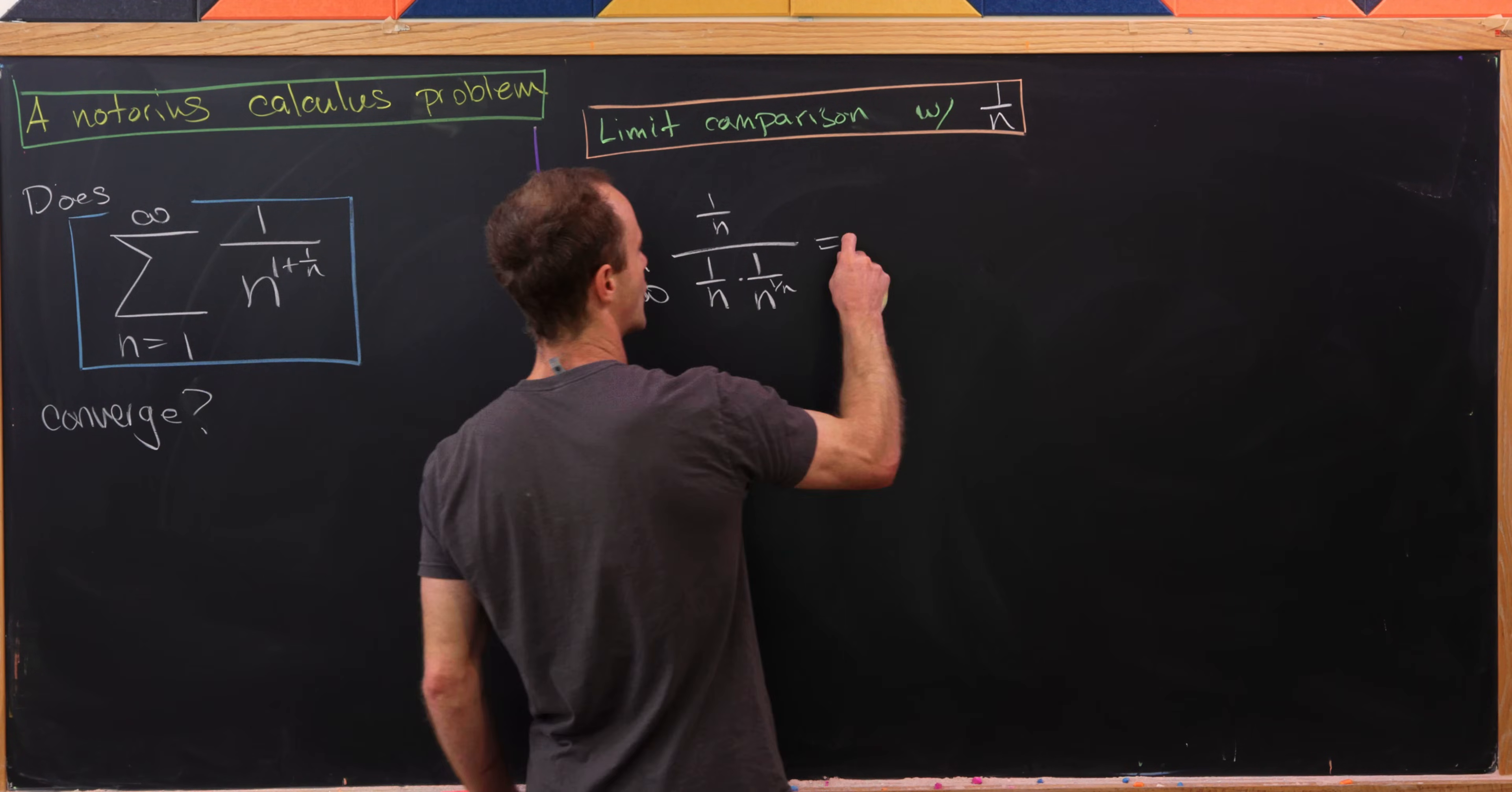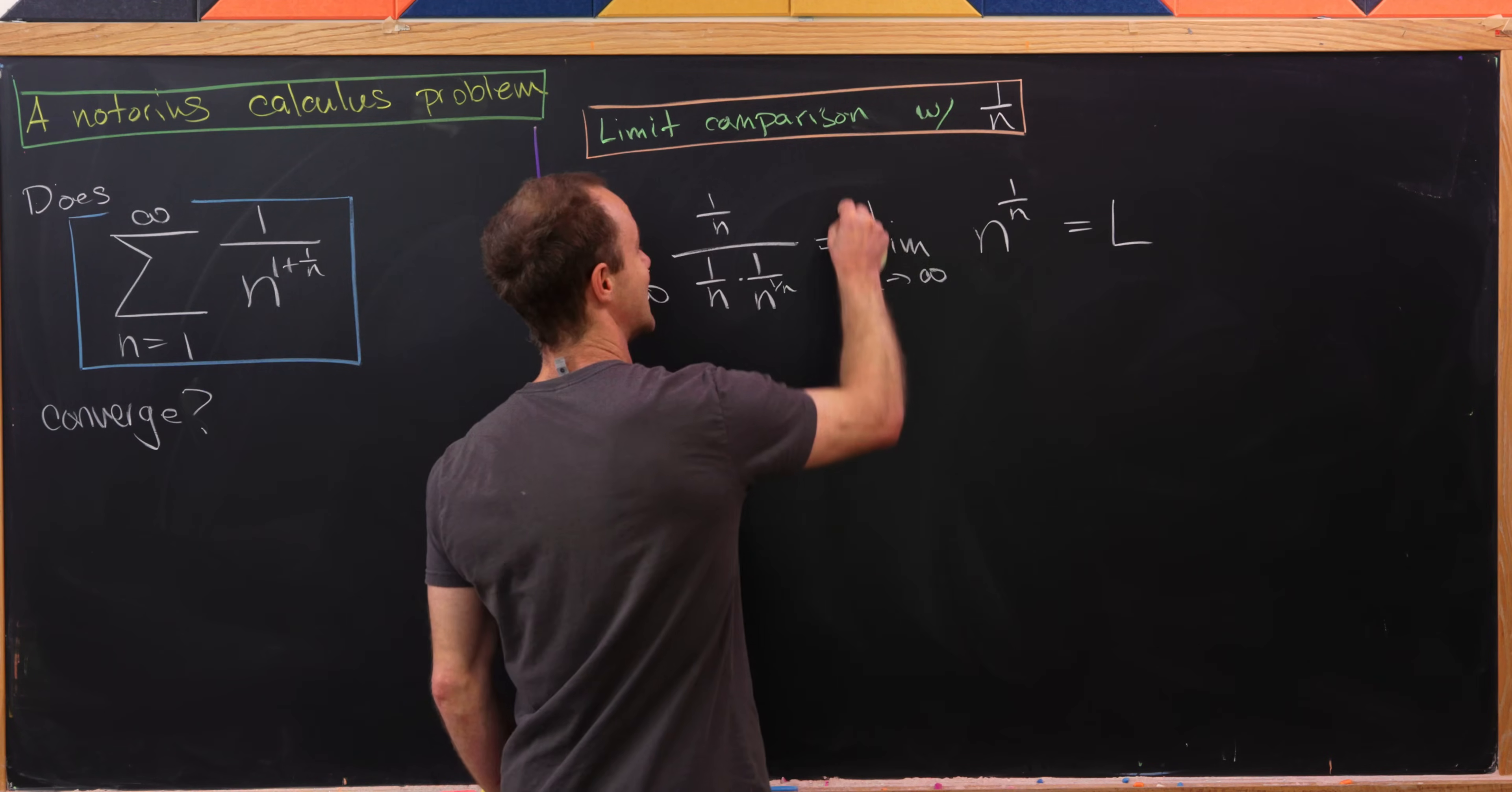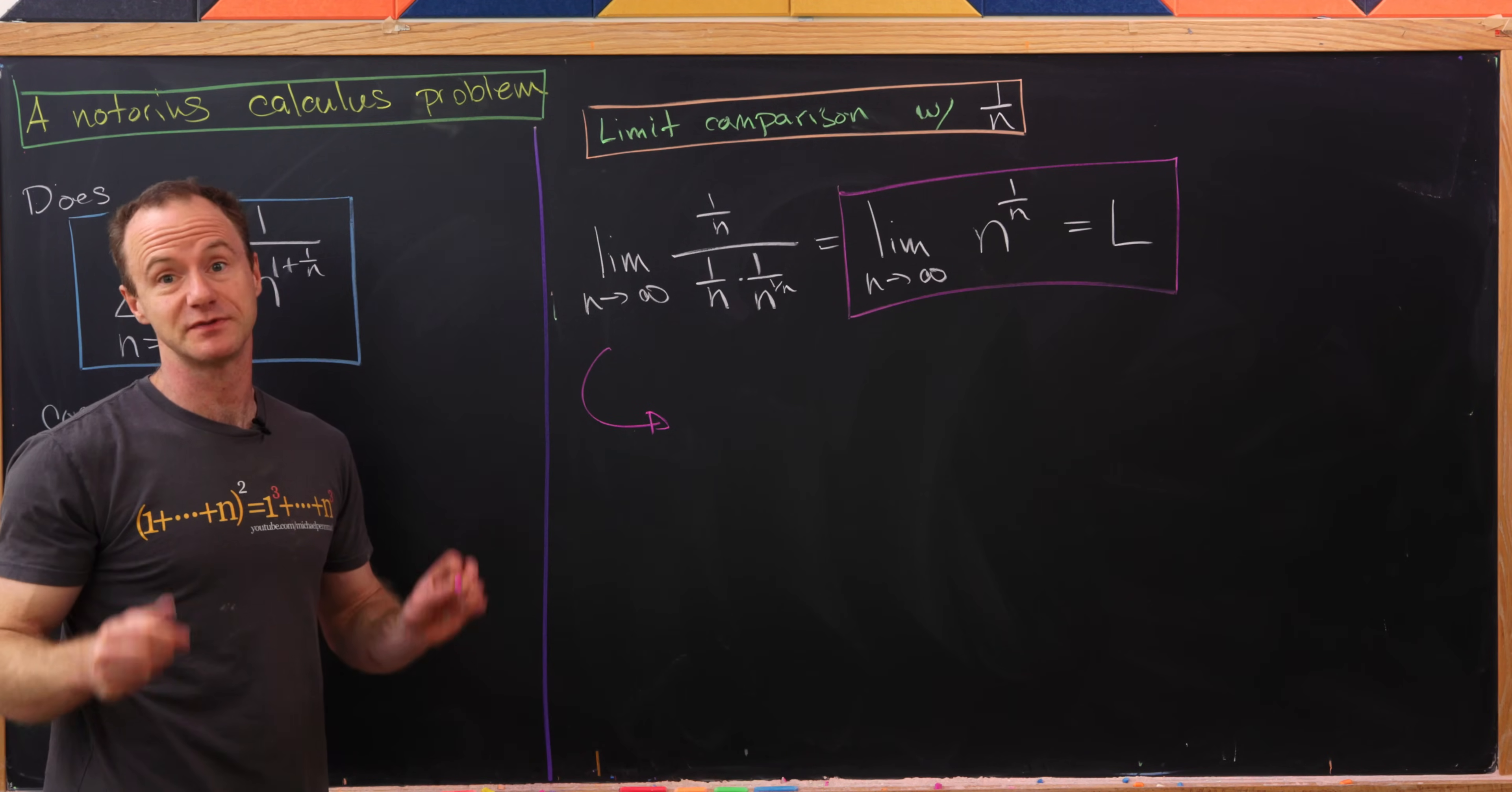So let's maybe quickly observe that this turns into the limit as n goes to infinity of n^(1/n). Now I'm going to set that limit equal to L just because at the moment it's an indeterminate form, but it's like an exponential type of indeterminate form, which means we probably need to apply some sort of logarithm to get into a form that we can perhaps use L'Hôpital's rule.